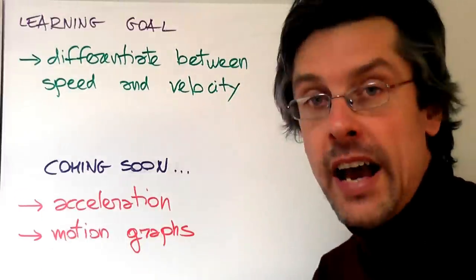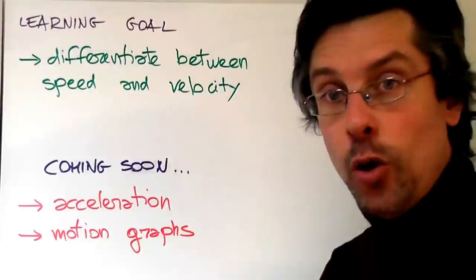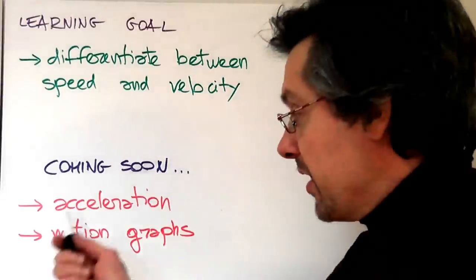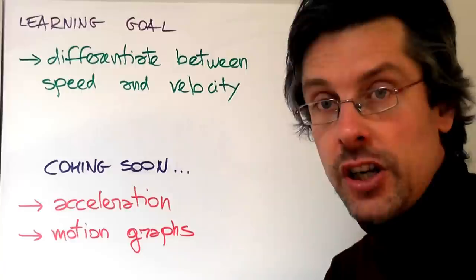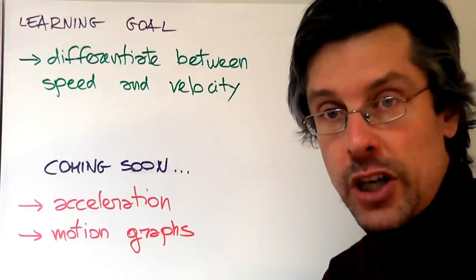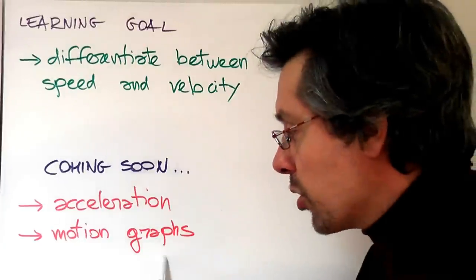Next, we will see what happens when speed and or direction changes, that means when velocity changes, and that is what we call acceleration. And then we are going to see how to represent the movement of an object by using motion graphs.